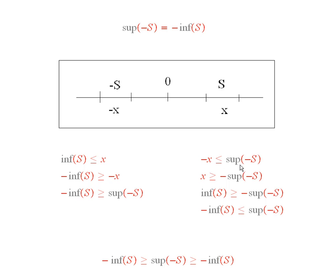Now, I'll multiply both sides by negative 1, and then we have x is bigger than or equal to minus the supremum of minus S. And now, this x here is just a typical thing in S. And so, what we have here is that minus the supremum of minus S is a lower bound to S.